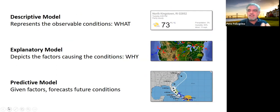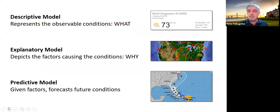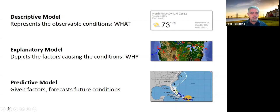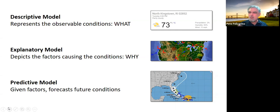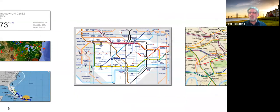Let's think about the kinds of models we can tackle and how we're going to use them in war gaming. Descriptive models try to represent the observable conditions. A map, for example, is a descriptive model — it describes the world, it's not really the world. It's a representation of the world. Maps are probably one of the best examples of this idea. They don't have to be accurate against the real world to serve their purpose.